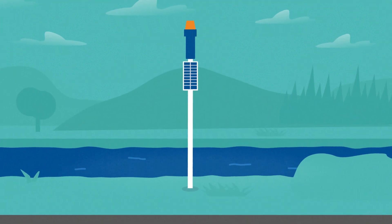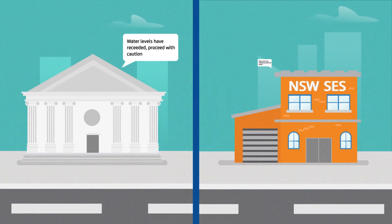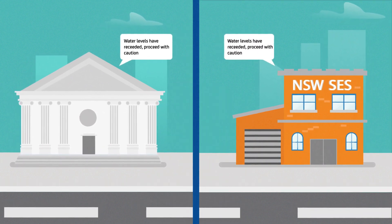When water levels return to normal, Dipstick sends another SMS to alert council and the SES that the community can now confidently get back on the road.